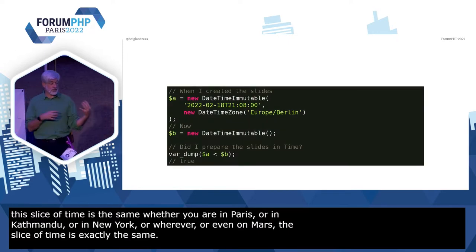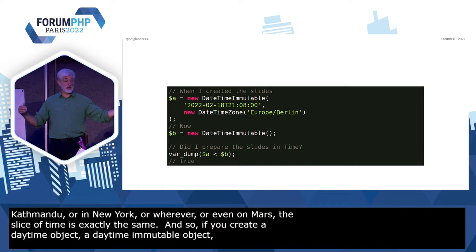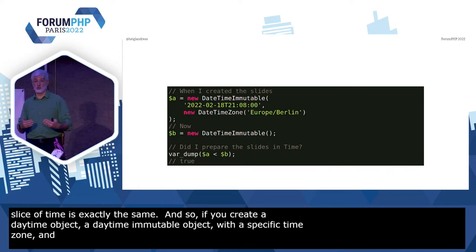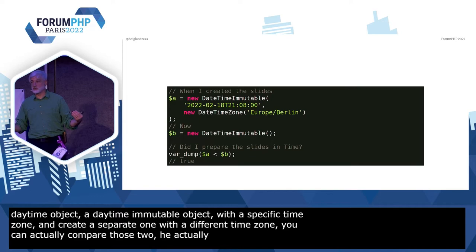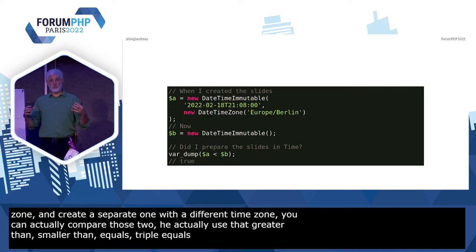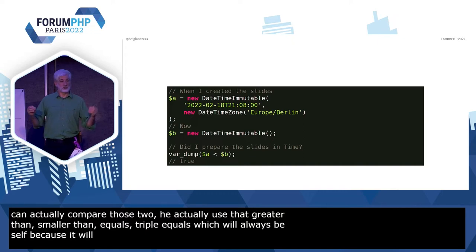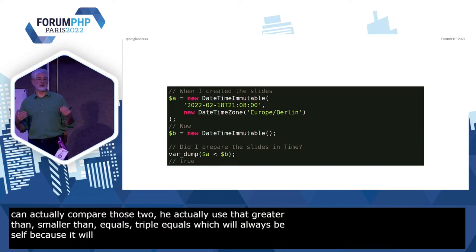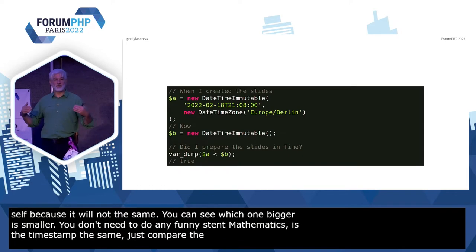So if you create a DateTimeImmutable object with a specific time zone and you create a separate one with another time zone, you can actually compare those two. You can use greater than, smaller than, equals — triple equals will always be false because it's not the same object. You can compare them to see which one is bigger, which one is smaller. You don't need to do any funny timestamp arithmetic. Just compare those two objects. Period. It's a value object — it has a value and it doesn't matter where that value was observed.